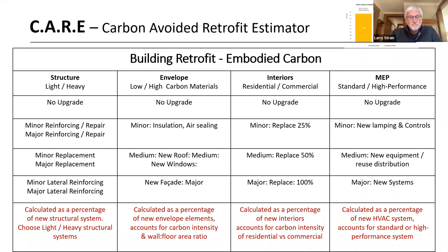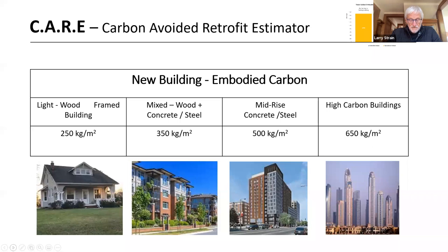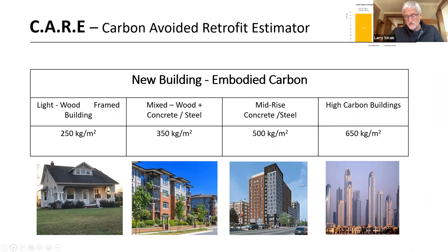These are the drop-down menu choices for the building retrofit. Each comes with associated embodied carbon. We have four categories of renovation options: structure, envelope, interiors, and MEP systems. You're selecting the level of upgrade for each category, from no upgrade all the way up to major upgrade and complete replacement. They're usually calculated as a percentage of what a new structural system or new envelope would be. Each choice comes with an embodied carbon footprint.